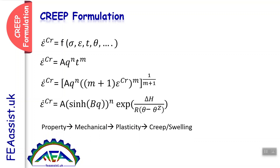But mostly, you cannot predict experimental behaviors and you cannot fit the experimental curves by these equations. So you need a place to actually write your CRIP formulation and force Abacus software to solve the CRIP problem based on your new equation, which is not one of these standard equations. This place is CRIP subroutines.